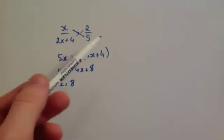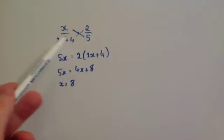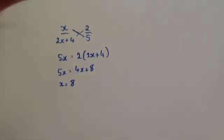So rather than timesing both sides by one denominator and both sides by the other denominator, you can use this thing called cross-multiplying.